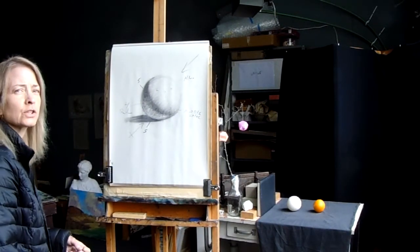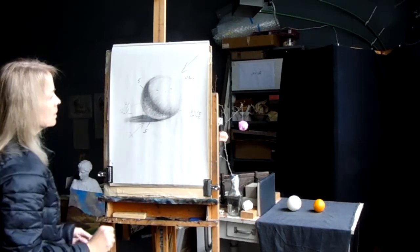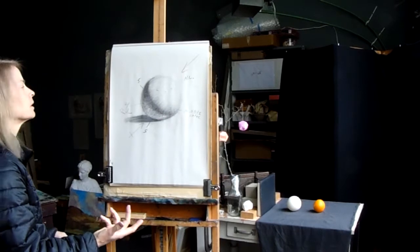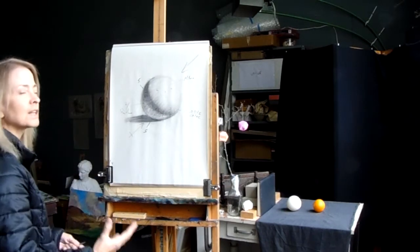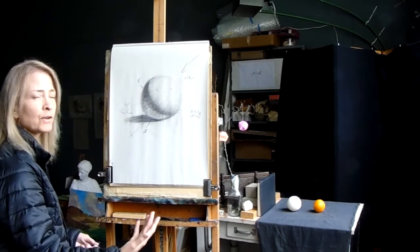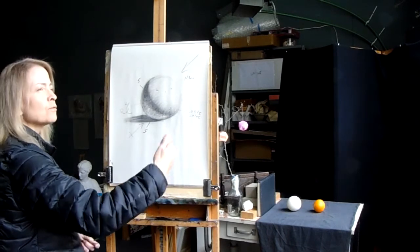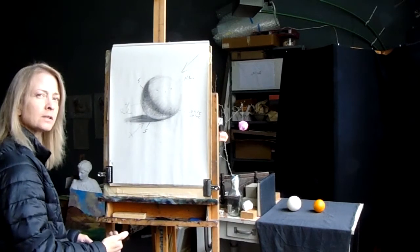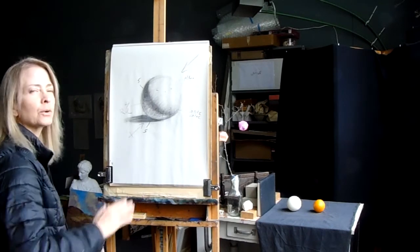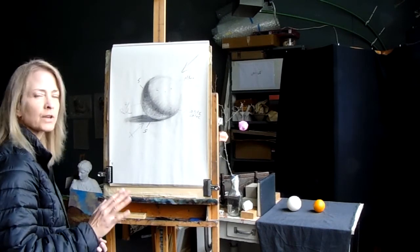So Leonardo developed this system. He sort of systematized it. It was more unconscious prior to Leonardo. And he identified that you need at least five values to achieve form. But you can also add more values. Seven values is what's typical. You can go as far as nine values. But the more values you add, the less contrast, the less drama that you're going to have. Five is the minimum. As you move toward nine, the transition gets so soft that it's a very soft atmospheric light, less contrast.